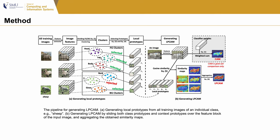To let the model pay attention to non-discriminative features as well, we propose to derive a prototype-based classifier by clustering all local features into key local prototypes, each representing a local semantic of the class. We collect local features across all spatial locations on the feature map blocks of all training samples in the class. Then, we cluster those local features into different clusters and select several prototypes. Finally, we slide each prototype over the feature map blocks. Each prototype can highlight the corresponding local region, and we aggregate the similarity maps produced by different prototypes to get the LPCAM.